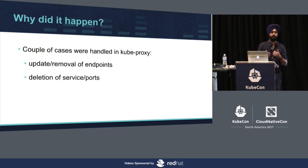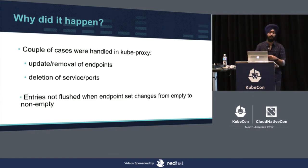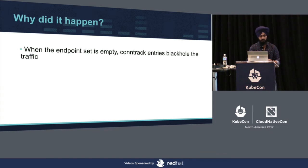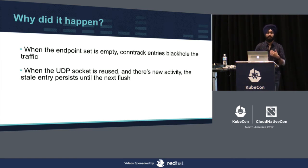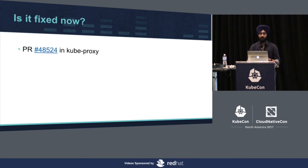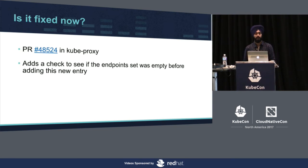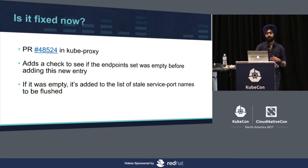Even for cases where deletion of a service and port happens, those cases were handled, but entries were not flushed when endpoints changed from empty to non-empty. When the endpoint set was empty, the conntrack entry would black-hole the traffic, and if the socket was reused and there was new activity, the stale entry would always be there. With UDP you won't get any error — you just won't receive the packet. Thankfully it's fixed now. A PR was added with a check to see if the endpoint set was empty before adding a new entry, and if it was, it adds that to the list of services and port names that need to be flushed.